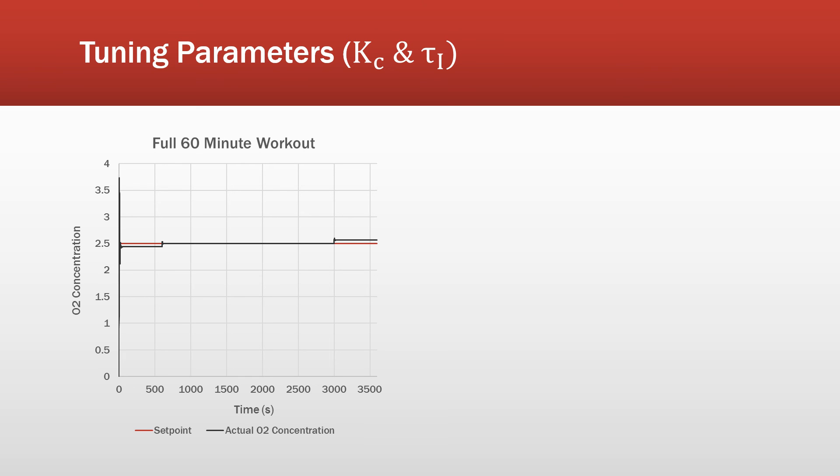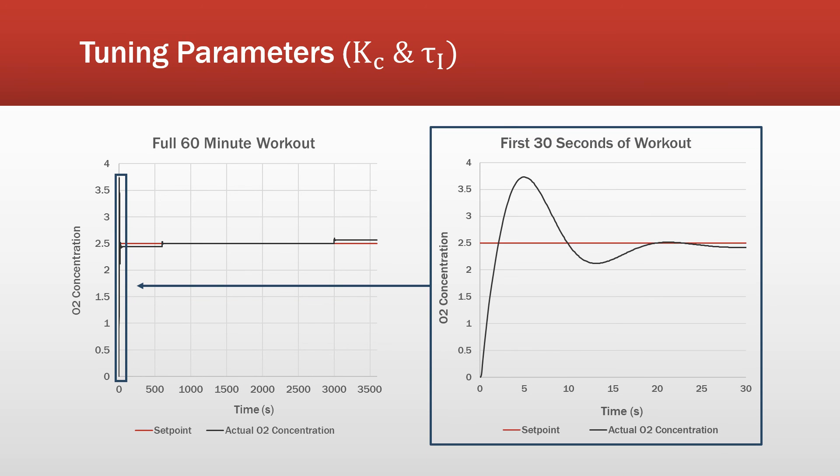And so one of the things we thought was important when we zoom in here to the first 30 seconds of the workout is that we wanted to make sure that it quickly went up to the desired O2 concentration. So there's about a 50% overshoot, but we felt like that was fine because it doesn't matter if there's more O2 concentration in the body. And as you can see, it gets up to the set point within five seconds.